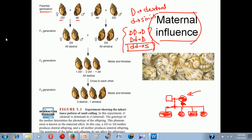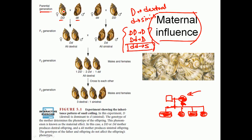At the very beginning, the female is capital D capital D crossed with the male small d small d. This cross generates all offspring as capital D small d, and every one of them is dextral — which is consistent with Mendelian inheritance. On the other hand, when the mother is small d small d sinistral and the father is capital D capital D dextral, according to Mendelian inheritance all offspring should be dextral, but instead all of them are sinistral. This cannot be explained by Mendelian inheritance.